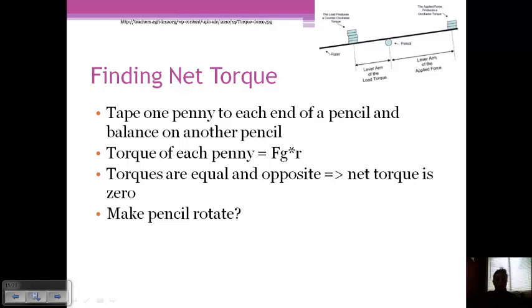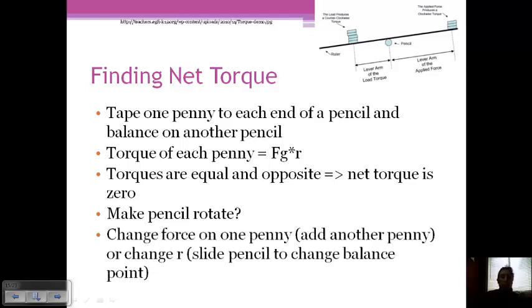Now, what if you wanted to make that pencil rotate? You would have to change one of those factors in order to get that to happen. And so you'd have to change the force on one penny, so you'd have to add more pennies to one side than the other, or you would have to change R, which is the distance from the pivot point. So you'd have to slide your bottom pencil, instead of it being in the center, you'd have to slide it to one side or the other to get your pencil to rotate around the other one.